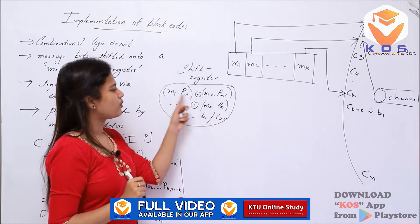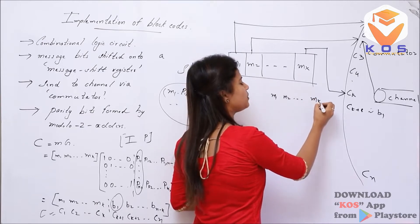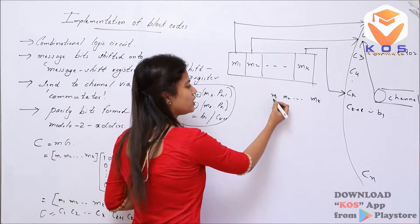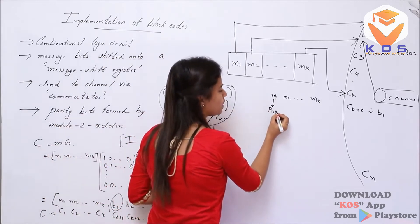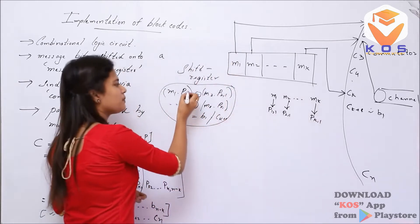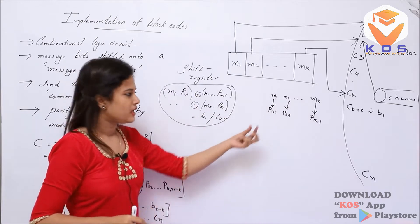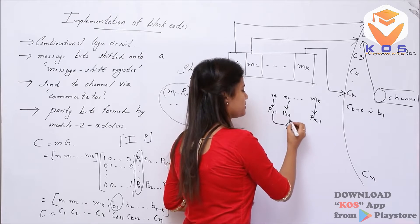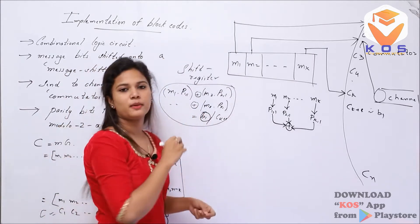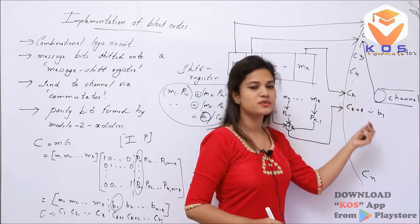The inputs are M1, M2, etc. up to Mk. These are multiplied by P11, P21, etc. M1 multiplied by P11, M2 multiplied by P21, Mk multiplied by Pk1. Then we apply an XOR operation, and we get the element of the code word Ck+1.